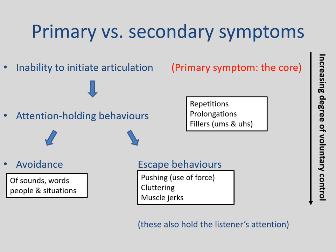Of all the secondary symptoms, arguably avoidance is one of the most problematic. Most people who stammer at least sometimes avoid words, situations or people that trigger their stammering. Such avoidance may prevent them from communicating effectively, and in the long run it will reinforce their tendency to fear the situations that they successfully avoid. Consequently, avoidance plays a key role in causing stammering to persist.